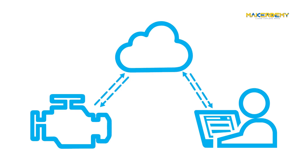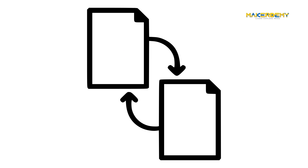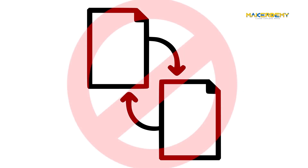The simple solution is to implement an OTA update feature before the product reached the market. Then we can simply update all our devices over the air using Wi-Fi. Is it that simple? In practice, it is not that simple as we can't simply override the current firmware with the security update.